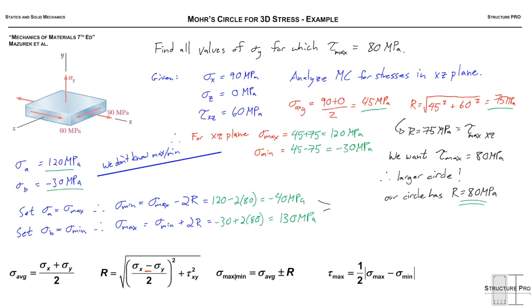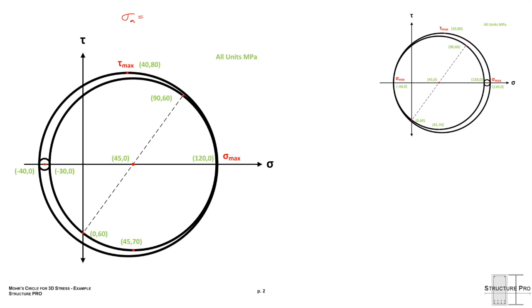So we solved for our two values of Sigma Y. We're done; the end of this problem kind of crept up on us. Now it is a good learning opportunity to actually look at the 3D Mohr's circles that we got going on here.